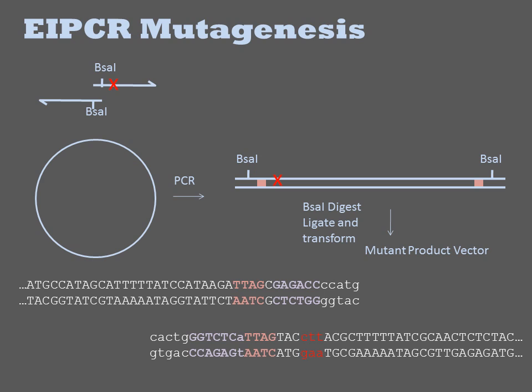EIPCR turns out to be an exceptional method of saturation mutagenesis for construction of libraries, which we'll revisit in a later lecture on combinatorial libraries.